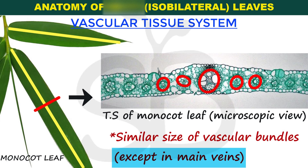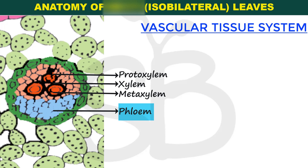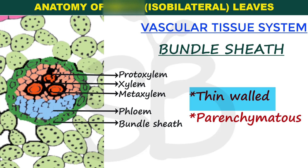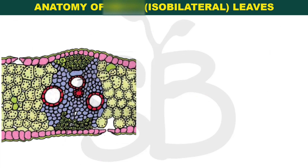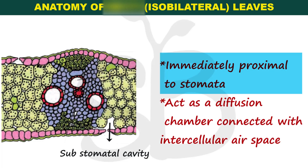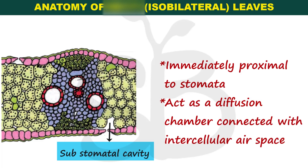In the vascular bundle, the protocylm is on the adaxial epidermis face and the metacylm — that is the later-formed xylem — is toward the lower face. The phloem is on the lower face. The bundle sheath consists of thin-walled parenchyma cells. A substomatal cavity is also present — this is the intercellular airspace known as the stomatal cavity.